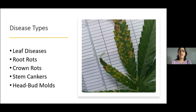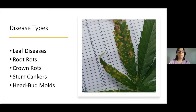Types of diseases: we've got leaf diseases like leaf spots and leaf blights, root rots, crown rots — the crown being right at the soil level, so southern blight would be a crown rot. There are also stem cankers, which are woody stem lesions that might happen on the trunk, stem, or a branch. And then of course head and bud molds — I'm not going to cover those today, but we have studies in the works and will be discussing that next time or uploading information to the website.